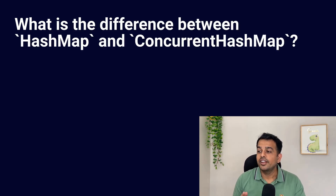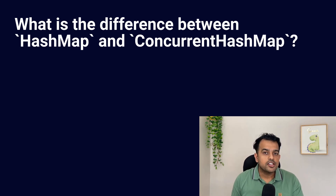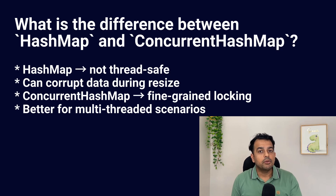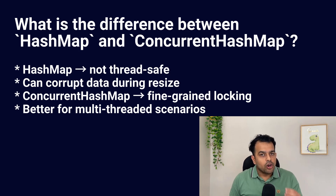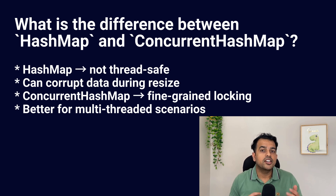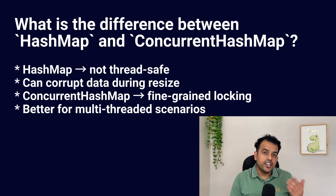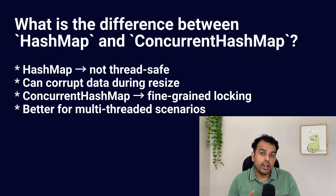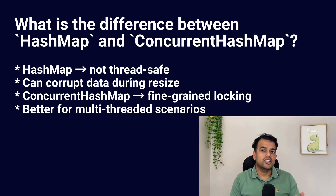What is the difference between HashMap and ConcurrentHashMap? HashMap is not thread safe — multiple threads can modify it at the same time, which can cause data corruption, especially during resizing. ConcurrentHashMap is designed for multi-threading. It uses internal locking and does not lock the whole map. While reading data it won't block the map, but while writing it will lock it, making it better for multi-threaded environments.